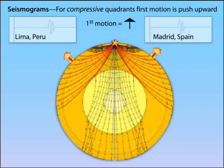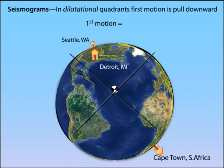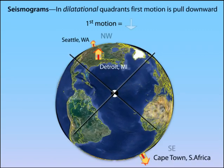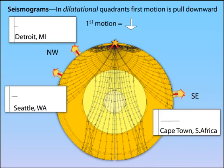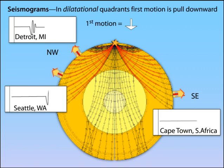The second cross section will show P waves traveling to Detroit and Seattle in the northwest quadrant and to Cape Town, South Africa in the southeast quadrant. These will have dilatational first arriving P waves that are pulled toward the earthquake, observed as a downward vertical motion on their seismograms.